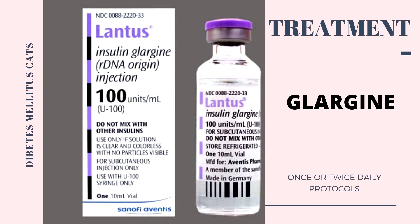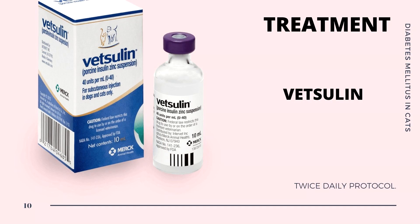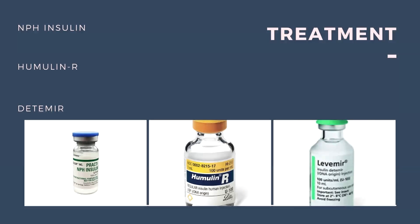The best success rate of treatment seems to be obtained with a twice daily protocol. Porcine insulin zinc suspension, also known in the United States as Vetzulin, is given to cats in 12-hour intervals. Other insulin products routinely used by veterinarians are NPH insulin, Humulin R, and Detemir.